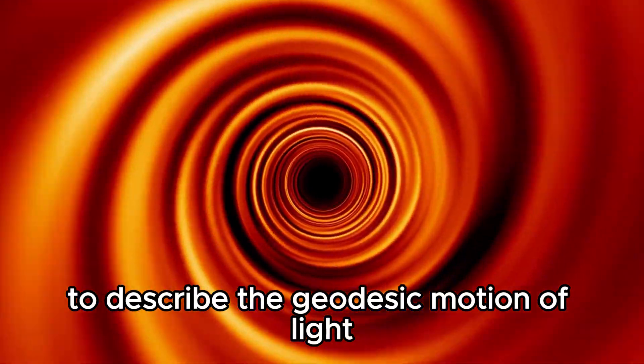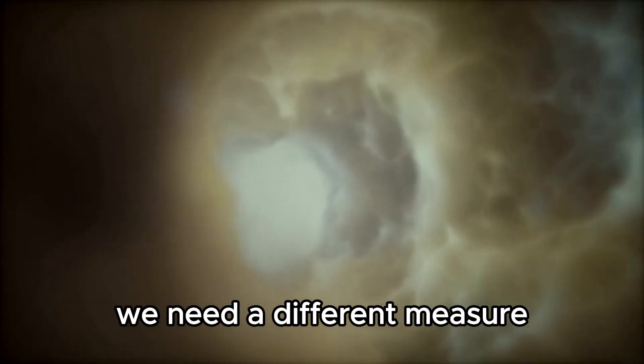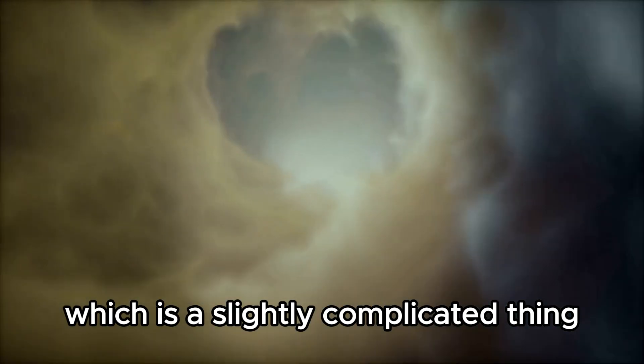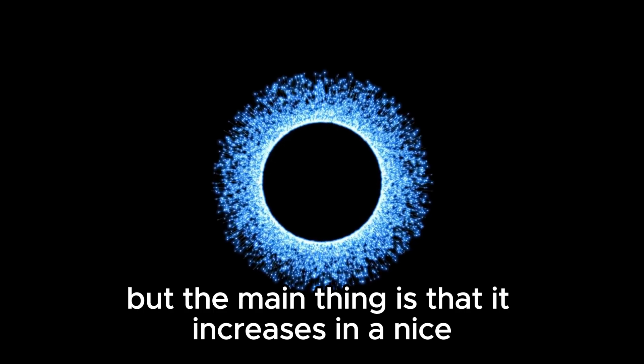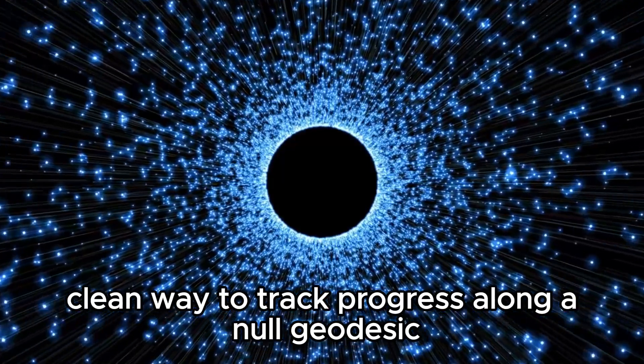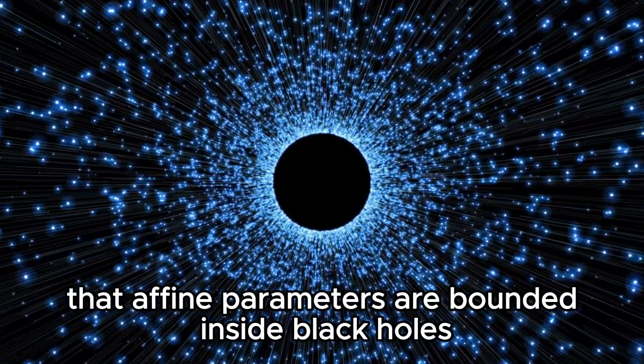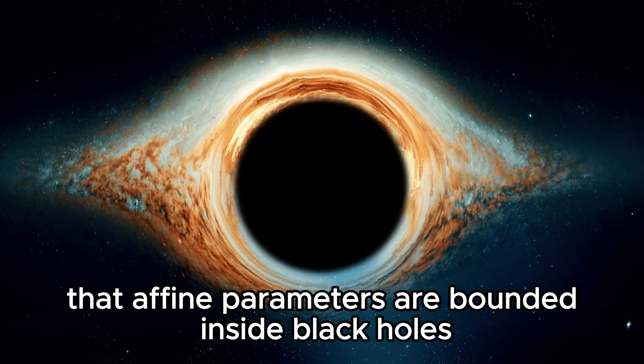To describe the geodesic motion of light, we need a different measure. We use something called an affine parameter, which is a slightly complicated thing, but the main thing is that it increases in a nice, clean way to track progress along a null geodesic.